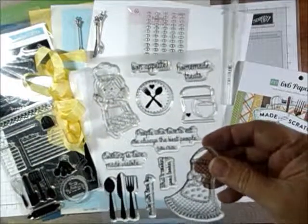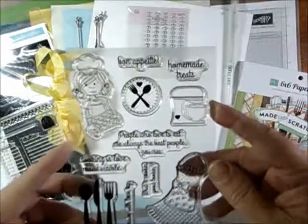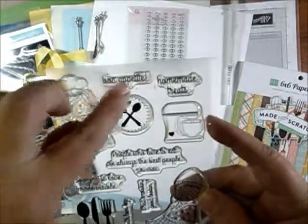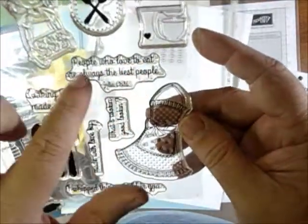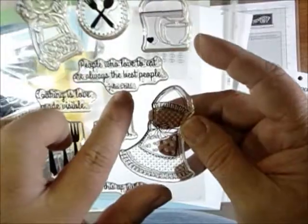Our first stamp set is called Whipped Up. It's a cute little girl, bon appetit, homemade treats, all kinds of things. People who love to eat are always the best people. Julia Child said that.